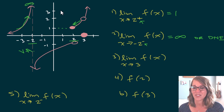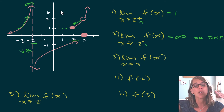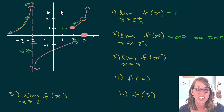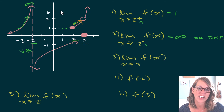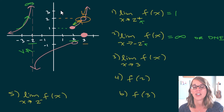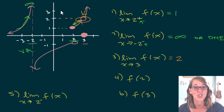For the next one, I am approaching 3 overall — no from the right or from the left specified — so I've got to approach 3 from both directions and have them line up. Approaching 3 from the left and from the right, I am approaching this open circle. The behavior is the same whether I come from the left or from the right — I'm landing on that open circle with a y value of 2. So that answer is 2.